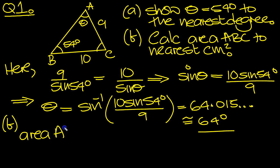That area ABC is equal to half BC sine A. 10 times 9 times the sine of this angle here, which is 180 minus 54 and 64.015.